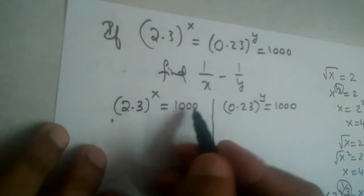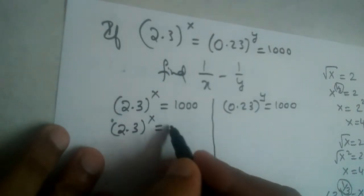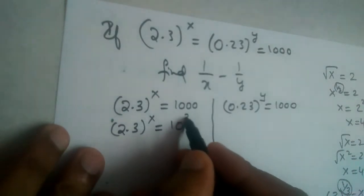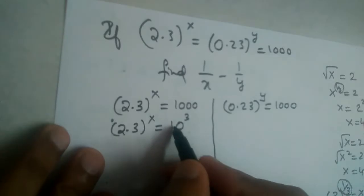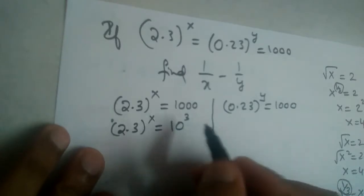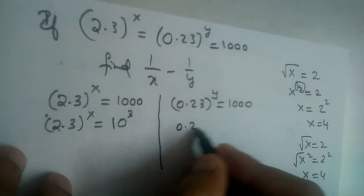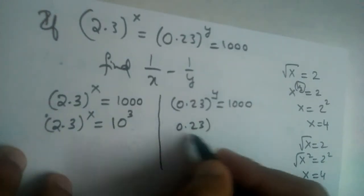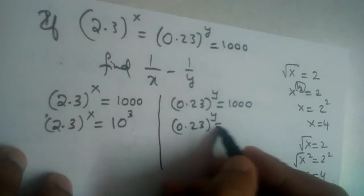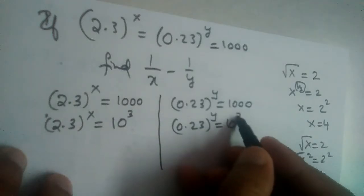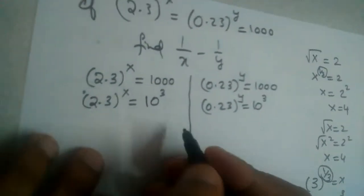We write 1000 as 10 cubed, so the first equation becomes 2.3 whole power x equals 10 cubed, and the second equation is 0.23 whole power y equals 10 cubed.